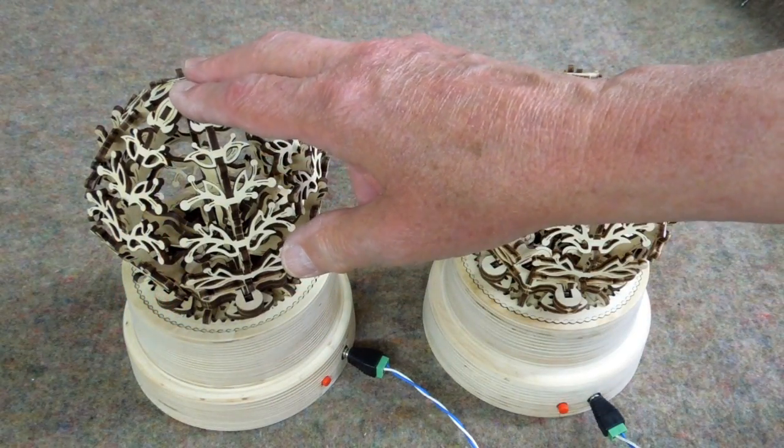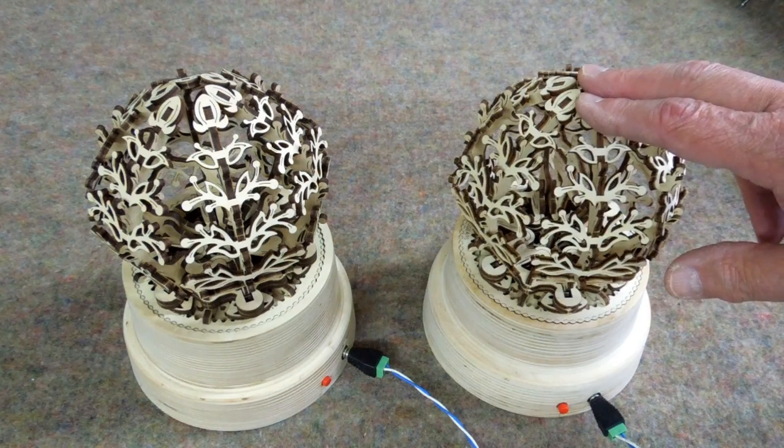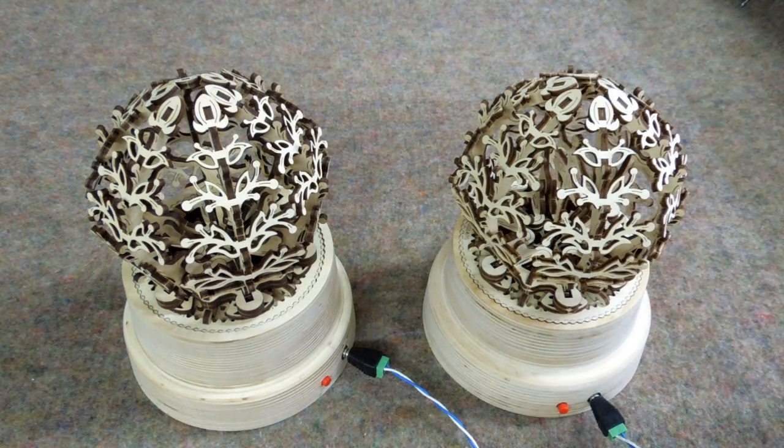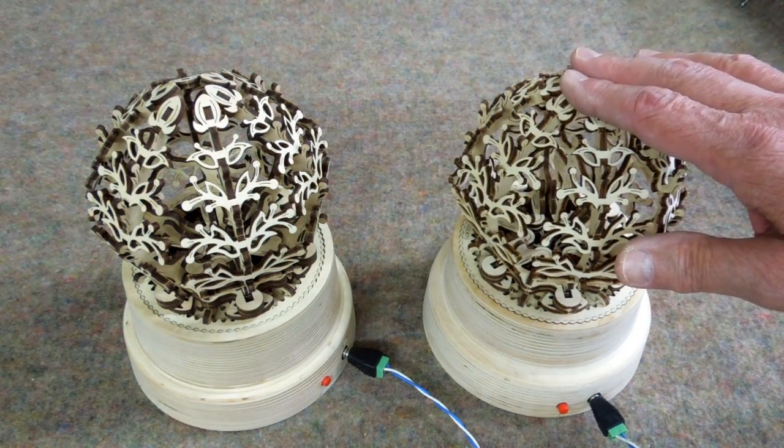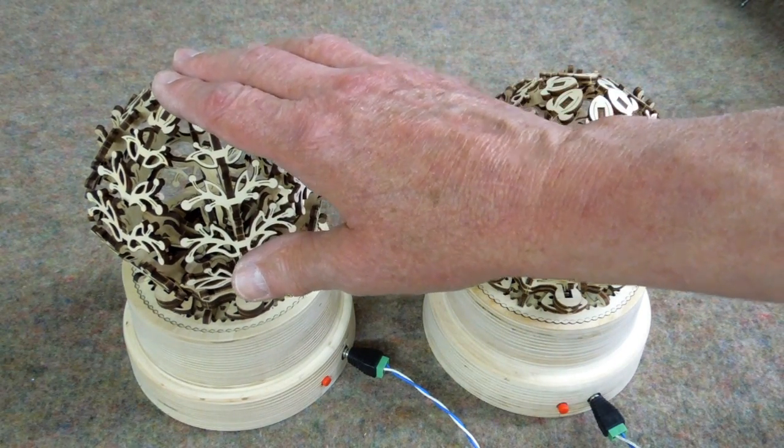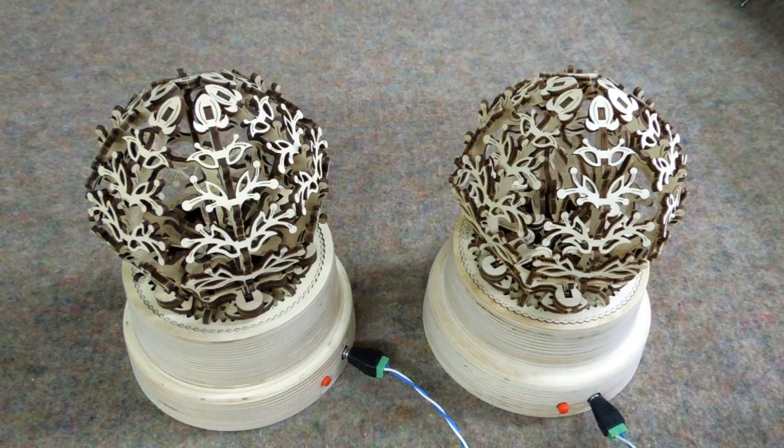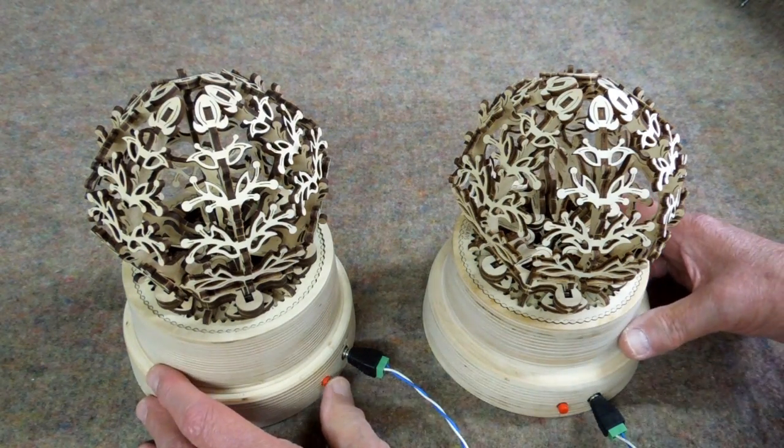This unit has a 3 RPM gear motor and this unit a 2 RPM gear motor. This on a power supply by itself will run 5 complete cycles, give or take, and this 7 complete cycles. With them both connected to the same power supply, that will slow down the motors a little bit.